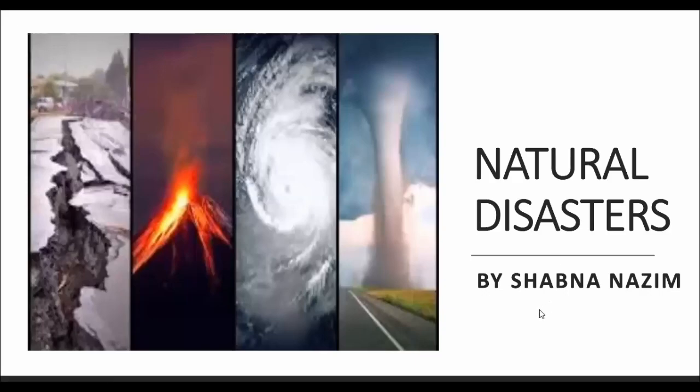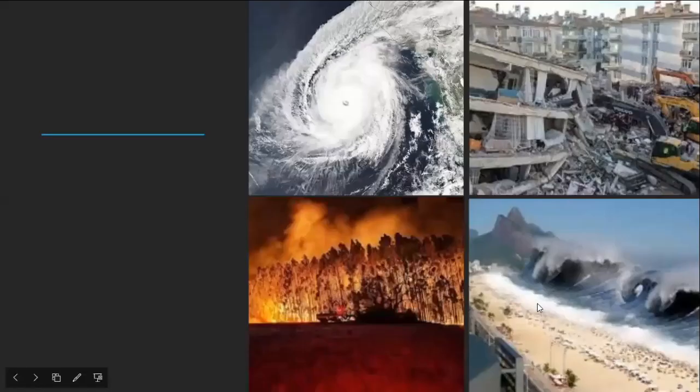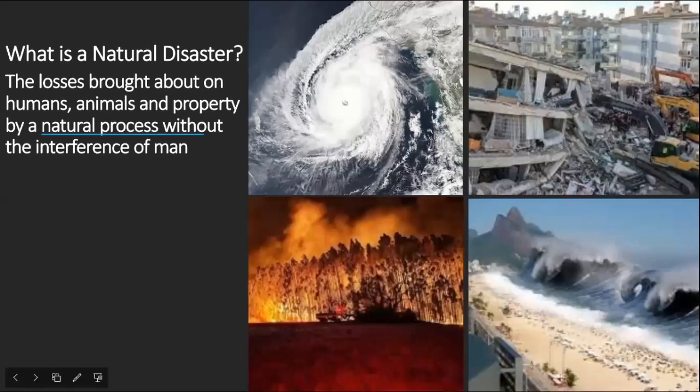Chapter 18: Natural Disasters. The losses brought about on humans, animals and property by a natural process without the interference of man is named as a natural disaster.